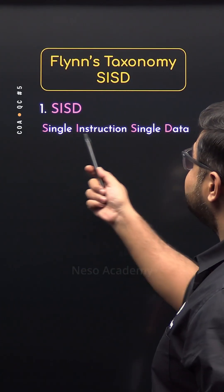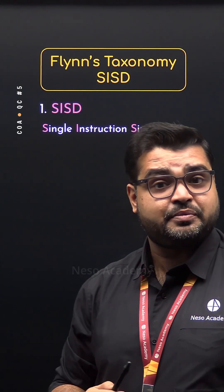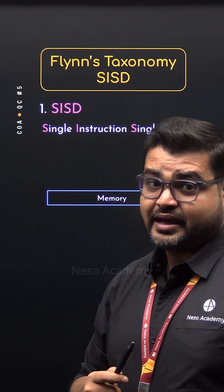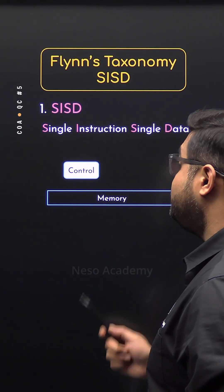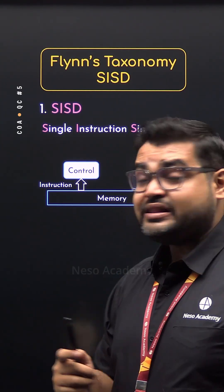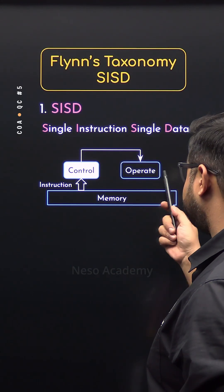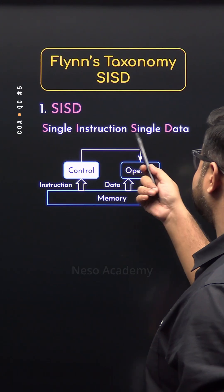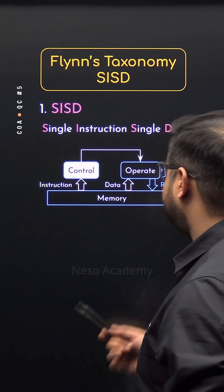SISD stands for Single Instruction Stream and Single Data Stream. It means from the memory where all the instructions reside, sending the appropriate signals, the control unit of the CPU will fetch an instruction — that is, a single instruction. Then based on that instruction, the control unit will tell the ALU to bring the set of data — that is, a single data stream — perform the operation on top of that, and then produce the result.